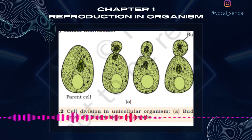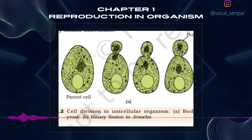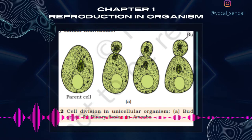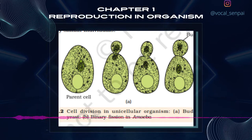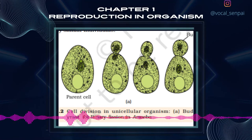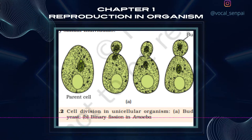There is a large diversity in the biological world and each organism has evolved its own mechanism to multiply and produce offspring. The organism's habitat, its internal physiology and several other factors are collectively responsible for how it reproduces. Based on whether there is participation of one organism or two in the process of reproduction, it is of two types. When offspring is produced by a single parent with or without the involvement of gamete formation, the reproduction is asexual. When two parents of opposite sex participate in the reproductive process and also involve fusion of male and female gametes, it is called sexual reproduction.